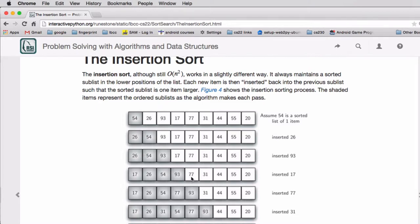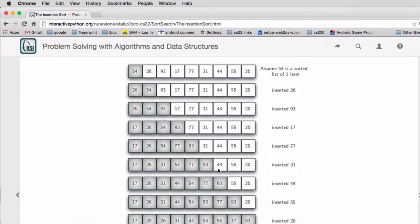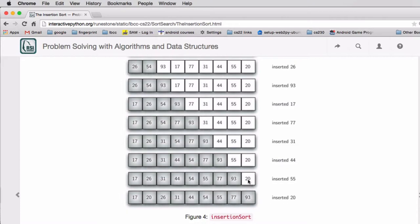And it inserts the 77 where it goes and then it inserts the 31 where it goes and so on. And then it inserts the 44, 55, and at the very end it inserts the 20 in this part of the list that's already sorted. So it puts in the 20 in the right place and then we've finished.